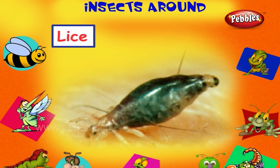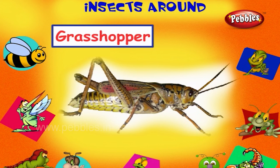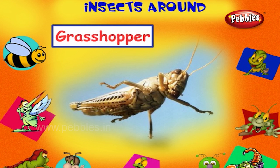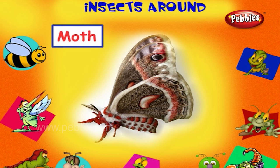This is a grasshopper. It eats the plant leaves. It jumps high in the air. This is a moth. It is active only at night. Some moths are larger than your hand.